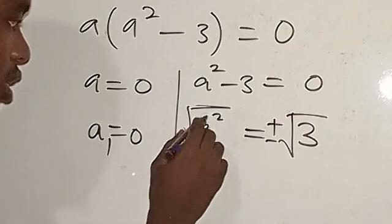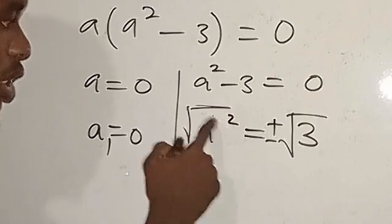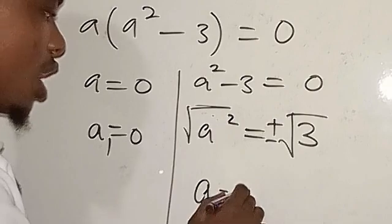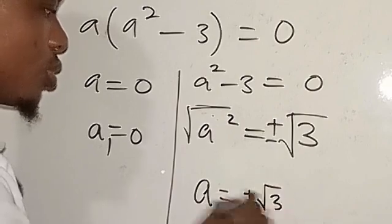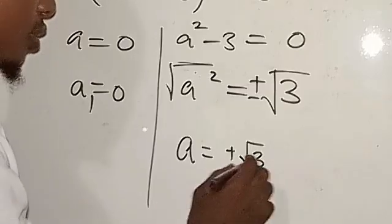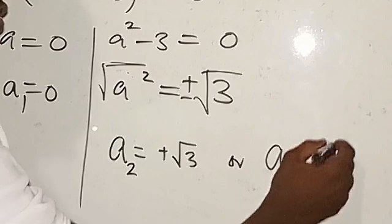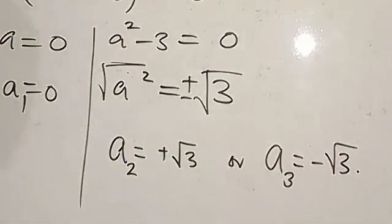We cancel out this square root, we have a equals plus √3, that is a₂, or we have a₃ to be minus √3.